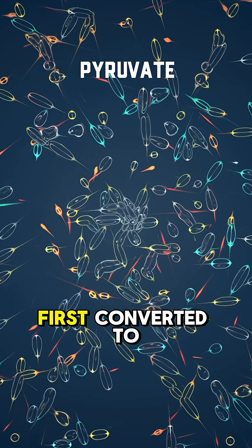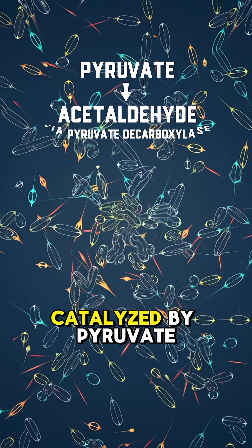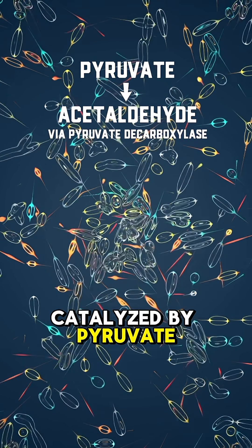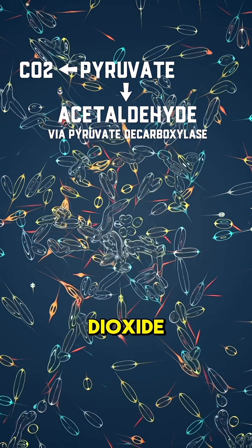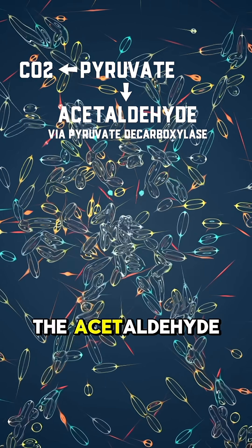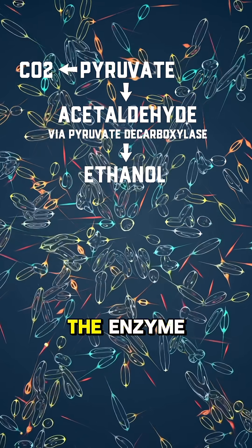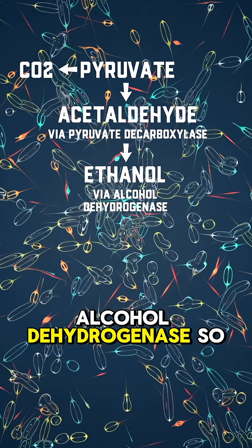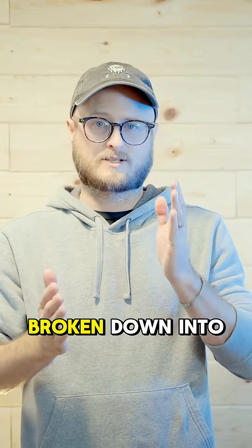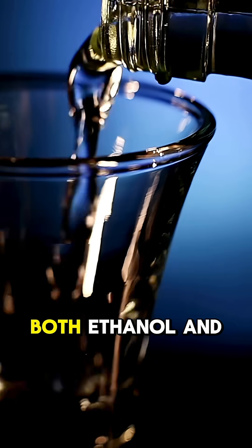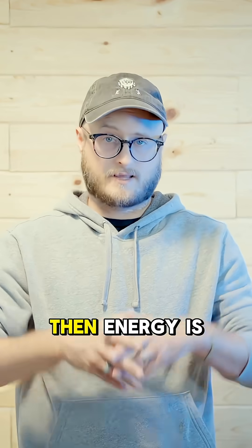That pyruvate is first converted to acetaldehyde through a reaction catalyzed by pyruvate decarboxylase, which releases carbon dioxide. The acetaldehyde is then reduced to ethanol by the enzyme alcohol dehydrogenase. So essentially, the pyruvate is broken down into both ethanol and carbon dioxide.